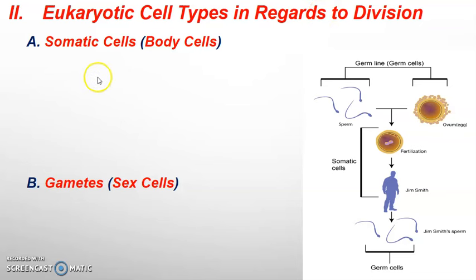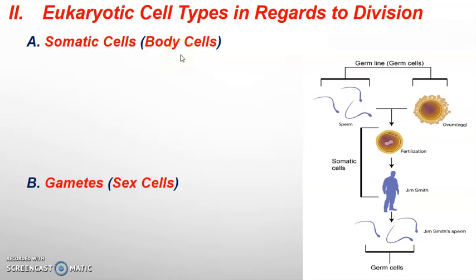We're going to start with two terms: somatic cells and gametes. Somatic cells are what we're going to look at for this first part of the unit in relation to mitosis. Gametes, or sex cells, are what we'll be seeing and what we make during the process of meiosis.